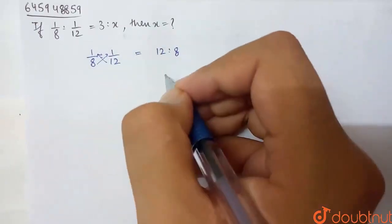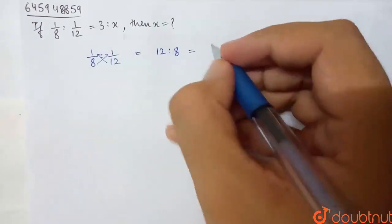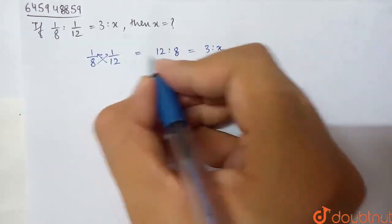So this will come to 12 is to 8, which is equal to the given 3 is to x.